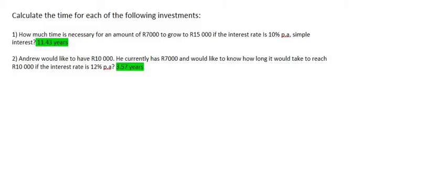For number one, it says how much time is necessary for an amount of 7,000 Rand to grow to 15,000 Rand if the interest rate is 10% per annum. Per annum means per year. Simple interest.